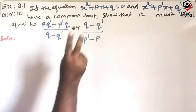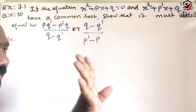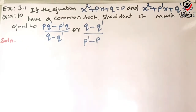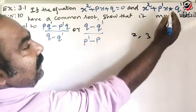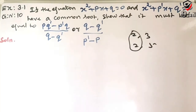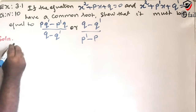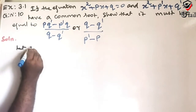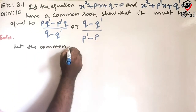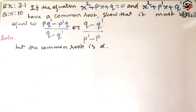Each equation has two roots, so the total routes are four routes. Of the four routes, one route is common. For example, this is {2,3} and this is {2,5} — here 2 is the common root. Let the common root be alpha.